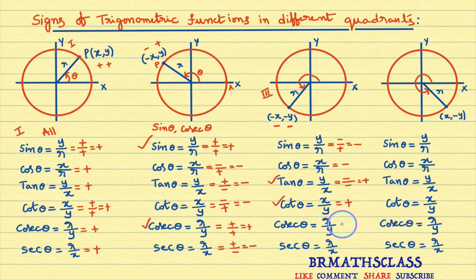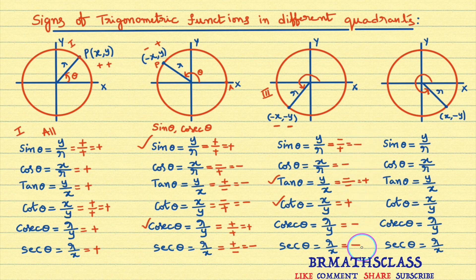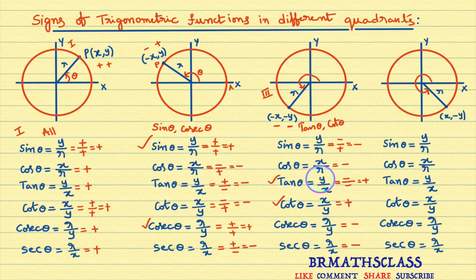Cosec theta is r by y — r is positive, y is negative — positive divided by negative is negative. Sec theta is r by x — r is positive, x is negative — positive divided by negative is negative. So in the third quadrant, tan theta and cot theta are positive. Remaining all trigonometric functions are negative.